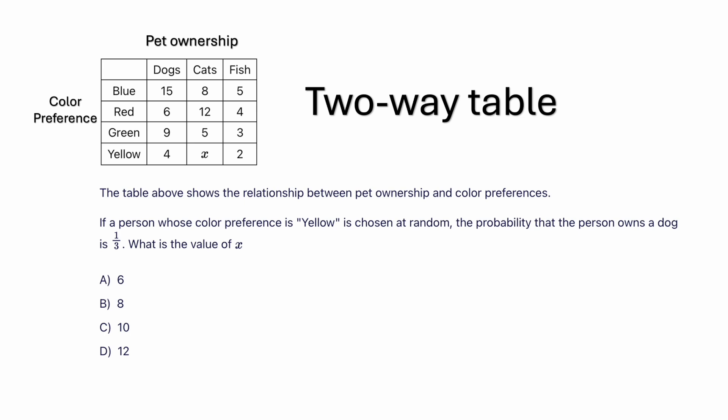The question asks: if a person whose color preference is yellow is chosen at random, the probability that the person owns a dog is one-third — what is the value of x? This is a probability-related question that also involves x, so we need to find the value of x, which means it involves some algebra. To solve for x, we need an equation, and the clue is the word 'if' — a condition is given, so we are dealing with conditional probability.